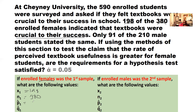The data that we collected in our sample suggests that 198 divided by 380 is our estimate of the population proportion, and that value gives us 0.521. To get the proportion of failures, that would simply be 1 minus 0.521, which gives us a value of 0.479.